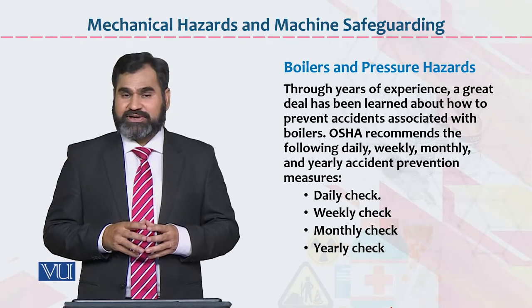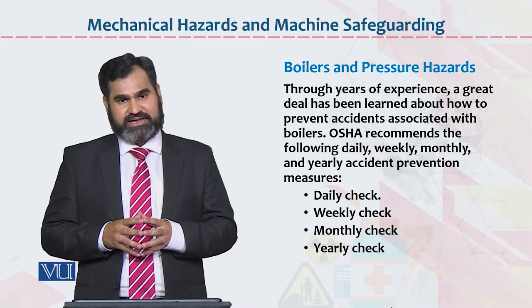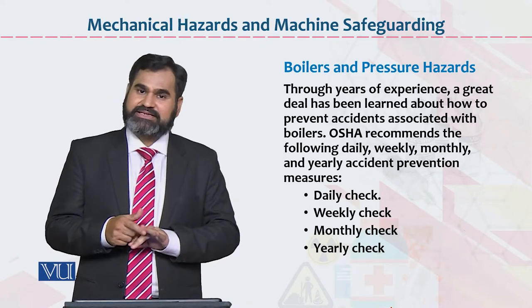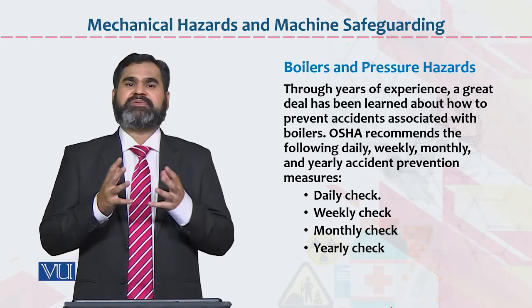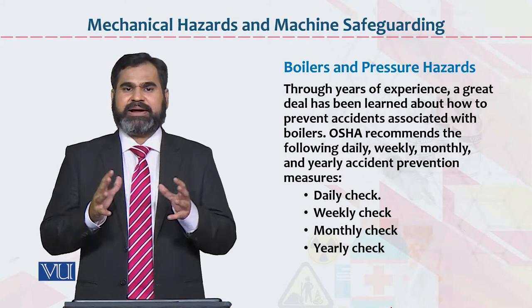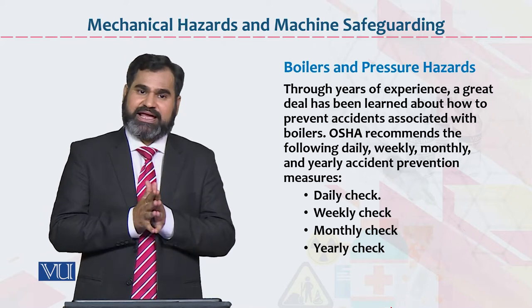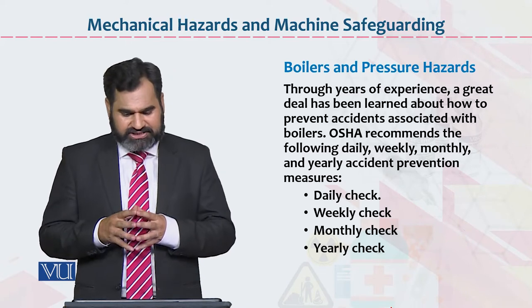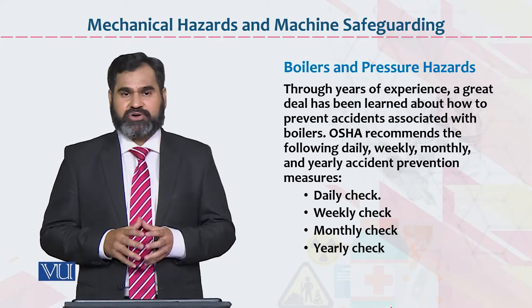Boiler and pressure hazards ko kaise control karna hai — is mein dear students chaar cheezein hain: daily check-up, weekly check-up, monthly check-up, aur yearly check-up. Daily basis par boiler ko dekhein, weekly basis par dekhein, mahine ke baad ya saal ke baad dekhein — lekin better hai ke daily basis par check-up ho. Taake aap ko maloom ho ke wahan kisi kisam ki problem hone wali hai toh usko control kiya ja sake. OSHA recommend karti hai ke aap in chaaron cheezein monitor karein.